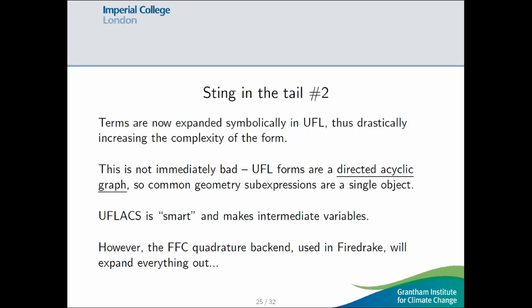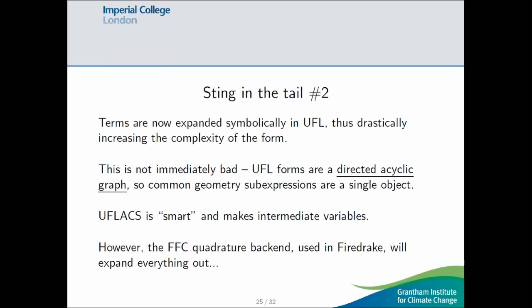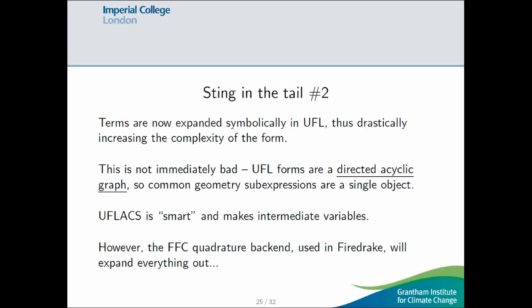And because these terms are expanded symbolically in UFL, the form has now got way more complicated. And this isn't immediately a bad thing, because the UFL forms are not a tree. They're actually a directed acyclic graph. So, if you have common geometry sub-expressions, like an entry of the inverse Jacobian, then these all point to a single object in memory. However, so, UFlex is smart here. And UFlex makes a single intermediate variable from this. However, the FFC quadrature backend, which is used in FireDrake, unfortunately, just expands everything out.